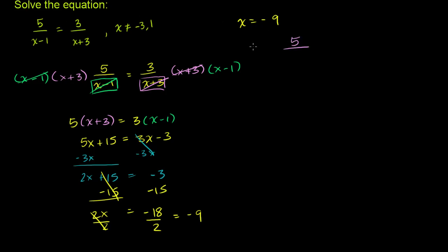So 5 over negative 9 minus 1 is equal to, let's see, 5 over negative 9 minus 1 is negative 10. So it's equal to 5 over negative 10, which is negative 1 half. That's where I substitute into the left-hand side of the equation.